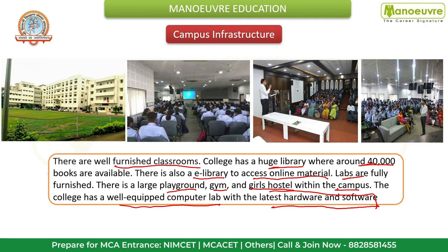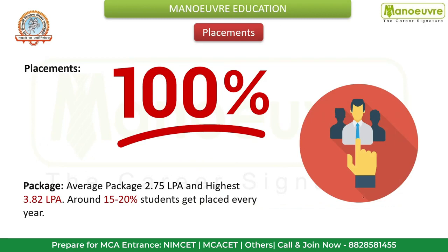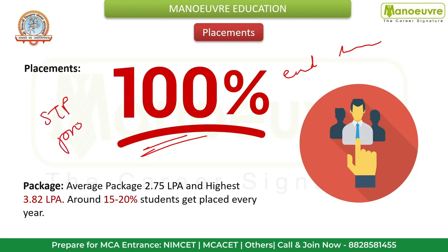The computer science program is taught by experienced faculty members who have expertise in various areas of computer science. Regarding placement, the Training and Placement Cell motivates students to find jobs that suit their profile and provides assistance for 100% placement. The training and placement activity begins in the first month of each academic year and continues to the end of the session, including a Student Training Program for first-year students.